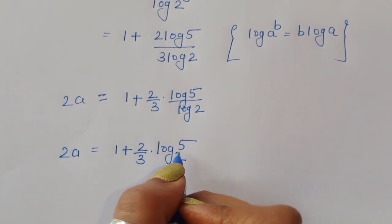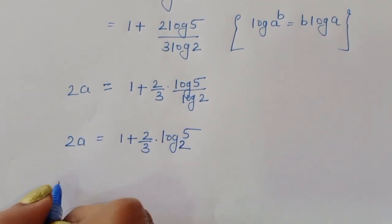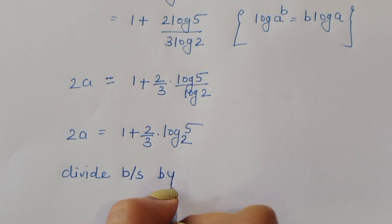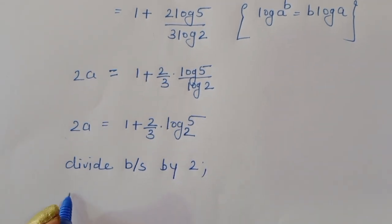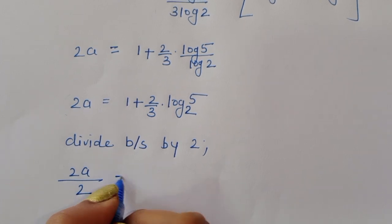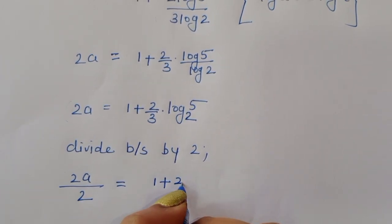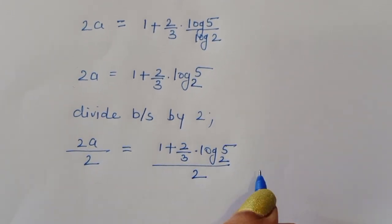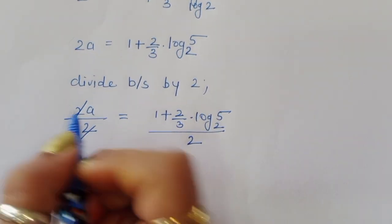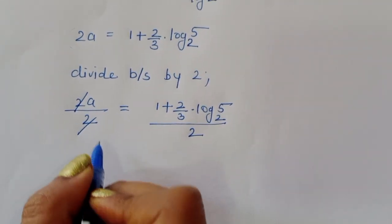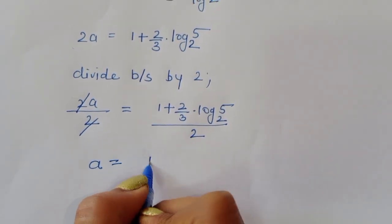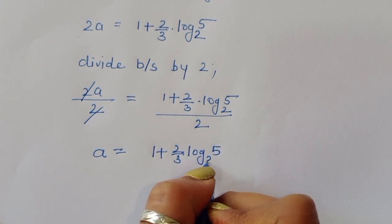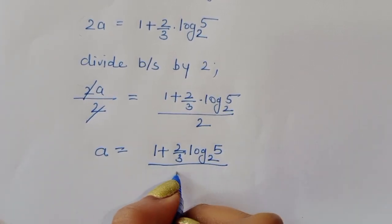Now we have to find the value of a, so we divide both sides by 2. Then 2a divided by 2 gives us a equals 1 plus 2 upon 3 times log of 5 to the base 2, all divided by 2. This is the value of a and this is the final solution.